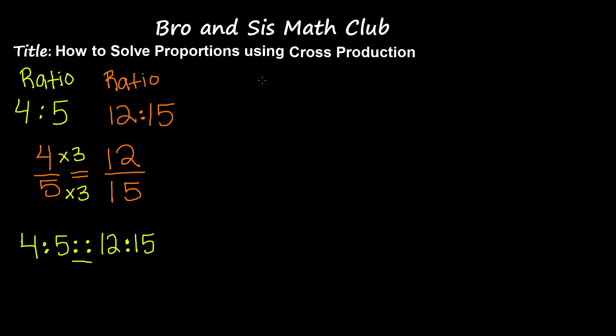Now let's say we have these two ratios, which are 5 to 9 and 10 to A. These two ratios are proportional. However, we don't know a number from one of our ratios, and we're going to find that out using cross-production. 5 to 9 can be written as 5 over 9, and 10 to A can be written as 10 over A.